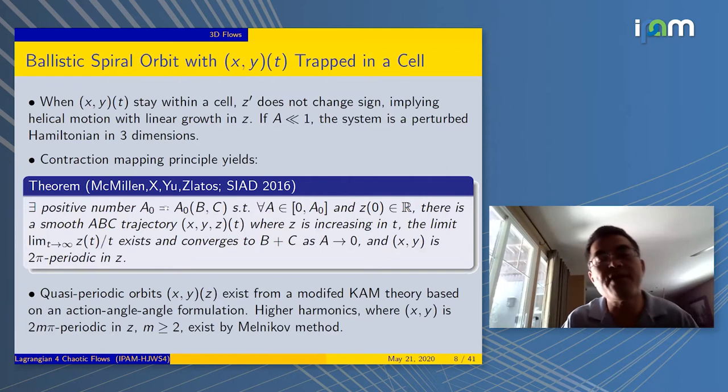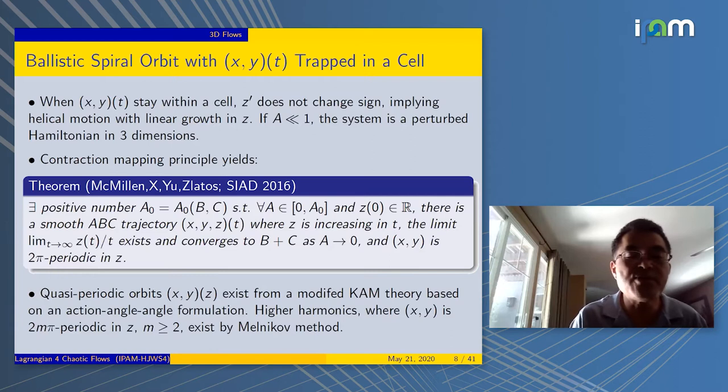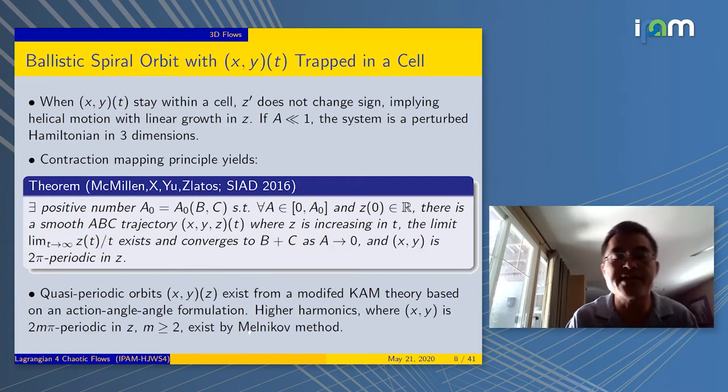The speed will converge to the exact speed at a equals zero if a is small. This is actually done in a very elementary way by contraction mapping. You can do more sophisticated stuff like KAM theory to construct quasi-periodic orbits, or if you want higher order harmonics, you can also do Melnikov.